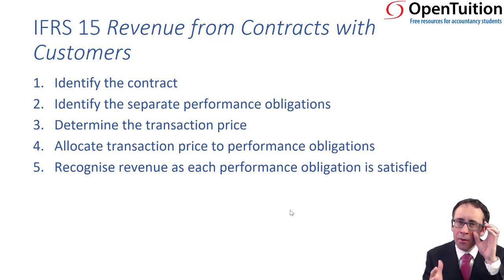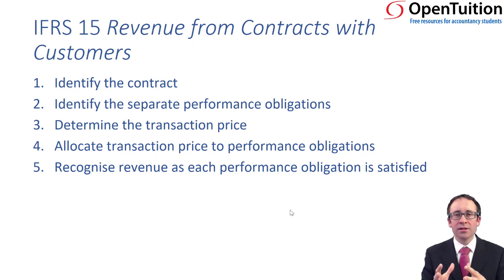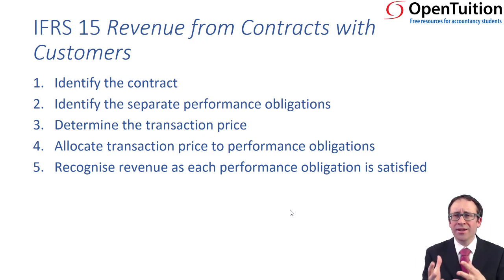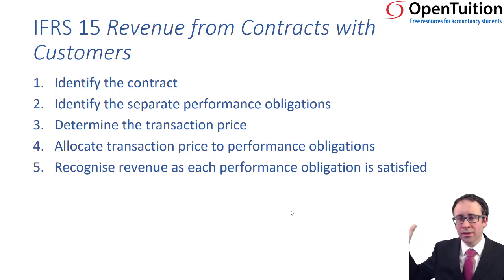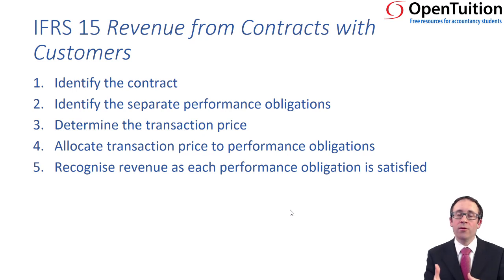That's the background. We have a lot more rules now. The old standard IAS 18 was very subjective and left a lot to the imagination, which led to some accounting scandals. Entities were recognising revenue too early when they shouldn't be, and their justification was that they were just following the judgements and guidance given within the standard. Well, now we have some rules — a five-step process. If we can follow the five-step process, we shouldn't go too far wrong in any exam question and, more importantly, within the real world.